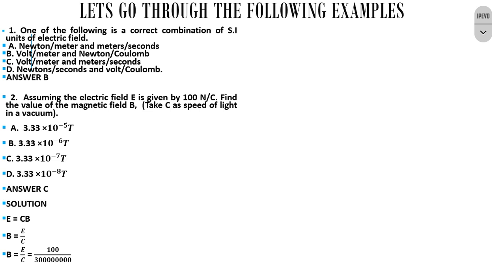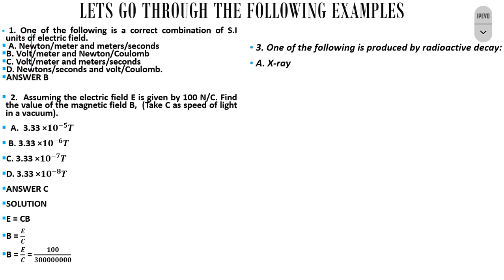Let's move to the third example. Which one of the following is produced by radioactive decay? The options are X-ray, visible light, gamma ray, and infrared. The correct answer is gamma ray.